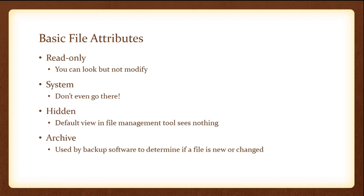Finally, archive is used by backup software to determine if a file is new or changed. When you back up files, it doesn't back up everything every time — only things that are different since the last backup — because backing up everything every time takes a lot of time and processing power. As soon as a file or folder has been changed, it will be marked as an archive file, and the backup software will find those markings and only back those up.